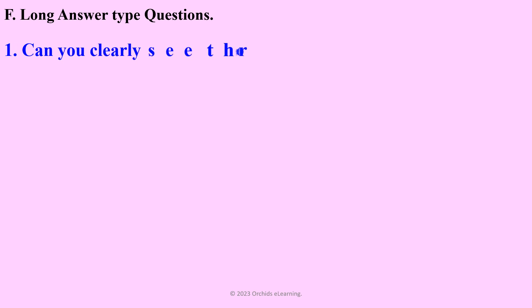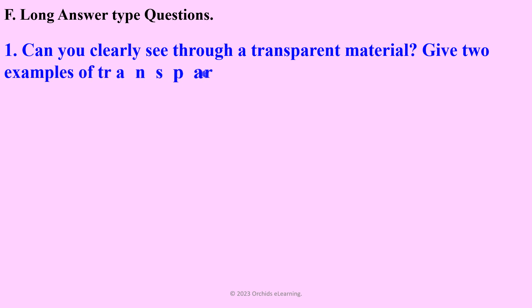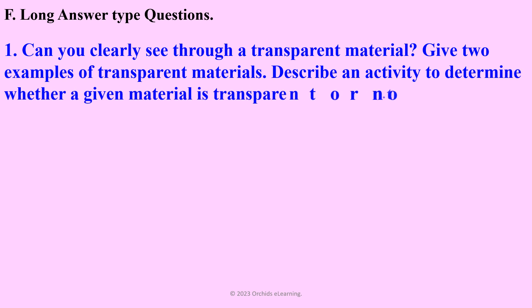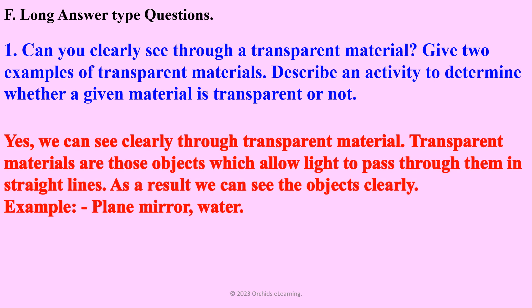Long answer type questions. Can you clearly see through a transparent material? Give two examples of transparent materials. Describe an activity to determine whether a given material is transparent or not. Yes, we can see clearly through transparent material. Transparent materials are those objects which allow light to pass through them in straight lines; as a result, we can see the objects clearly. Examples: plain glass, water.